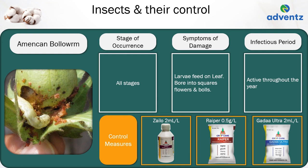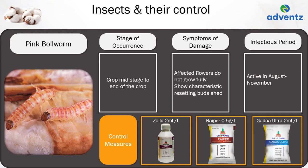The next insect is pink bollworm. It can occur from mid-stage to the end of the crop. The symptoms of damage are affected flowers do not grow fully, and it shows the characteristic rosetting of buds and bud shed. It is most active in August to September. Control: apply Zaleo at 2 ml per litre, or Jai Kisan Griper at 0.5 grams per litre, or Jai Kisan Gadda Ultra at 2 ml per litre.